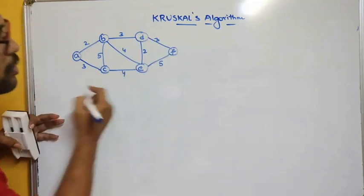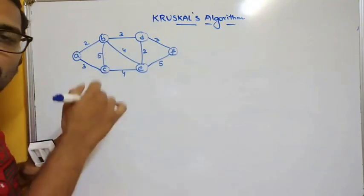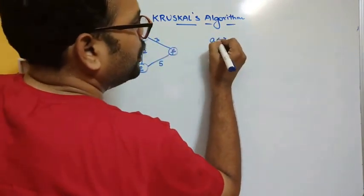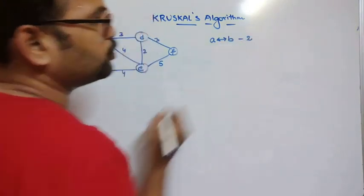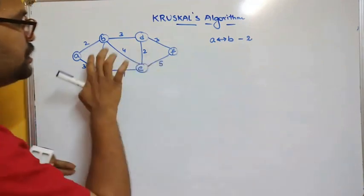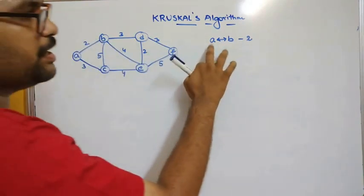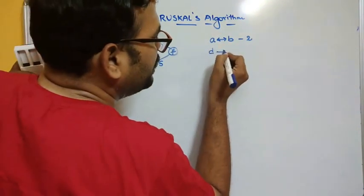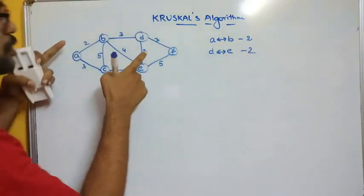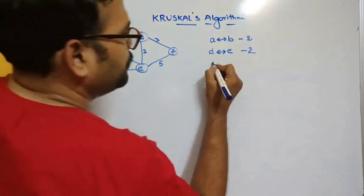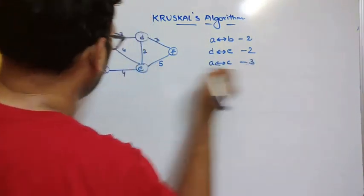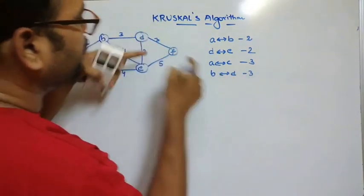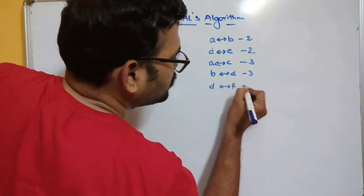The least cost among these edges is 2. So first, edges with cost 2: A to B with cost 2, and D to E with cost 2. Next, edges with cost 3: A to C with cost 3, B to D with cost 3, and D to F with cost 3.